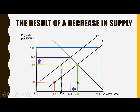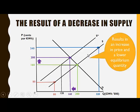You can see that the equilibrium quantity decreased from 200 to 160. So the decrease in supply has resulted in an increase in price and a lower equilibrium quantity.